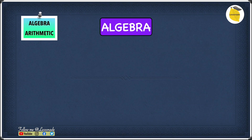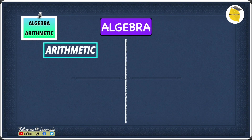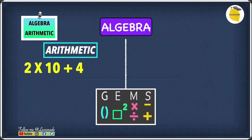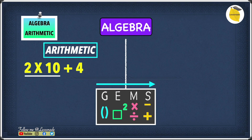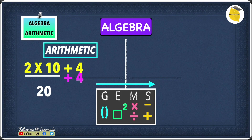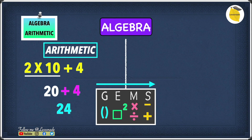Let's compare algebra and arithmetic. In arithmetic, the example is 2 times 10 plus 4. Using GEMS, you follow the order of operations from G to S. We have multiplication in 2 times 10 and addition in plus 4. Since multiplication comes before addition, we do 2 times 10 first, which gives 20. Then 20 plus 4 gives an answer of 24.